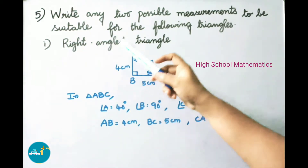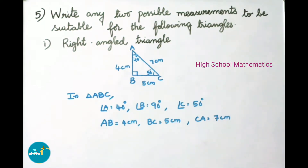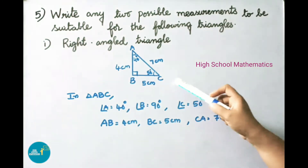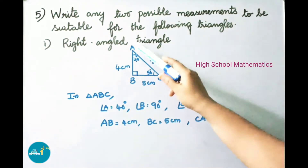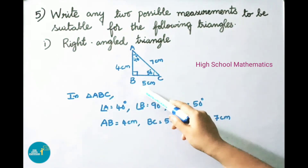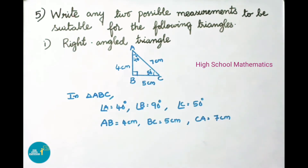Question number five: write any two possible measurements suitable for the following triangles. First one: right angle triangle. Example triangle ABC — angle A is 40 degrees, angle B is 90 degrees (right angle), and angle C is 50 degrees. Side AB is 4 cm, BC is 5 cm, and CA is 7 cm. These are two possible measurements for right angle triangle ABC.